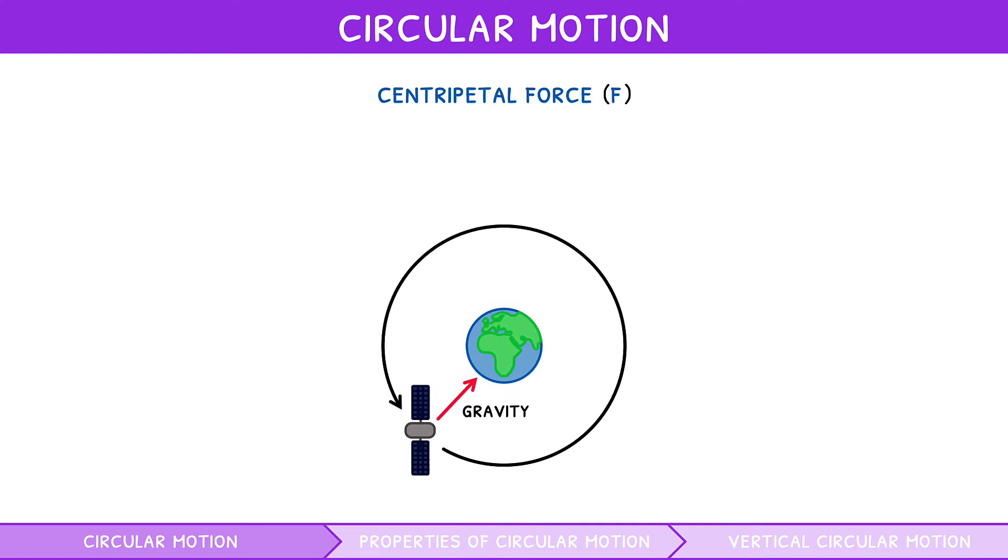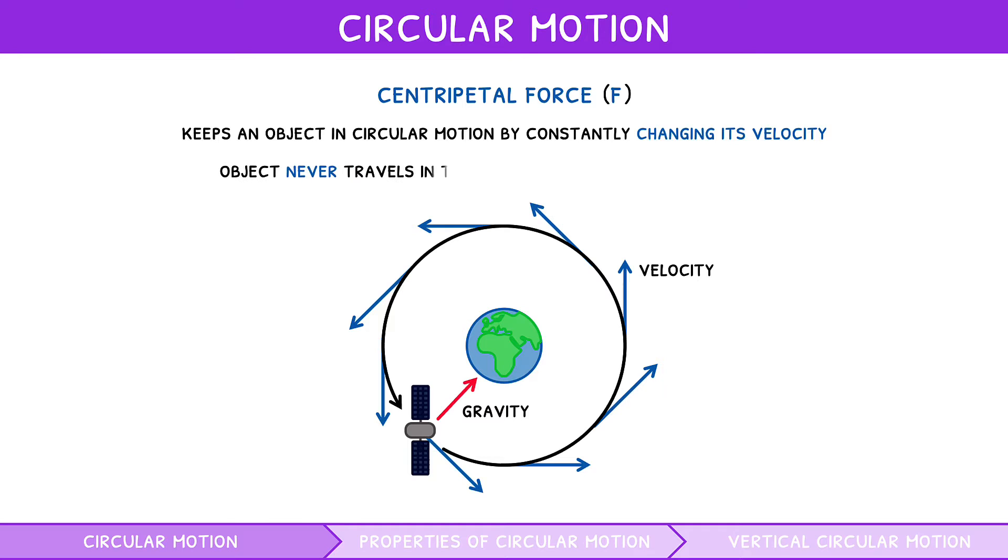This force is responsible for keeping an object in circular motion by constantly changing its velocity. However, an object in circular motion never travels in the direction of this centripetal force. It is important to recognise that this therefore means that no work is being done on the object by the centripetal force. This is a common trick question in the exam.